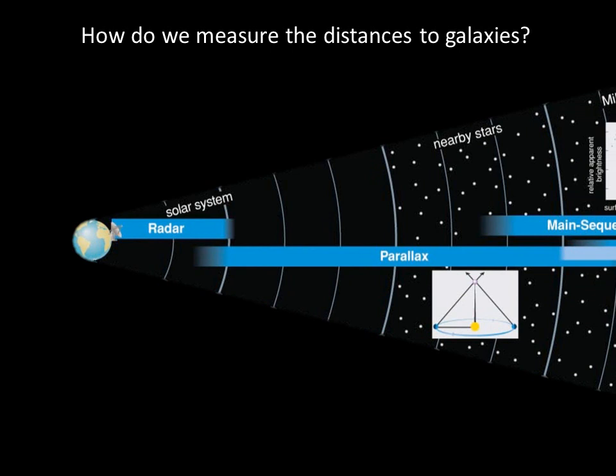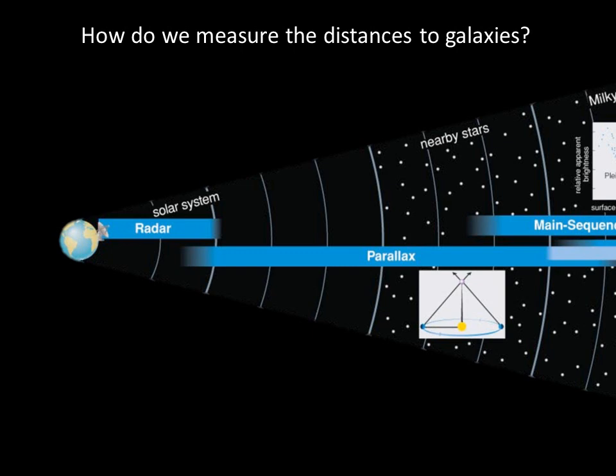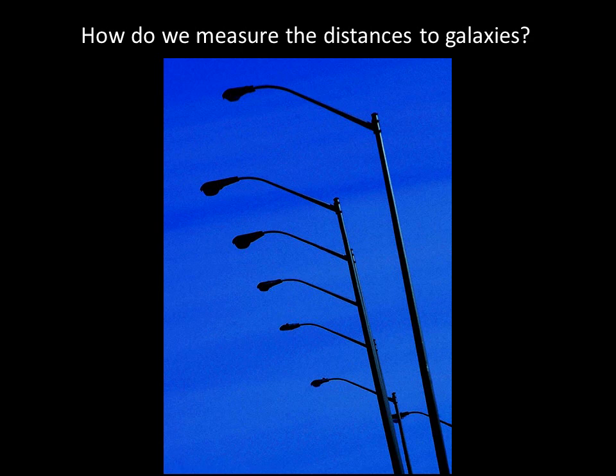Therefore, radar ranging measurements of the astronomical unit represent the first link in the distance chain, and parallax measurements of distances to nearby stars represent the second link.